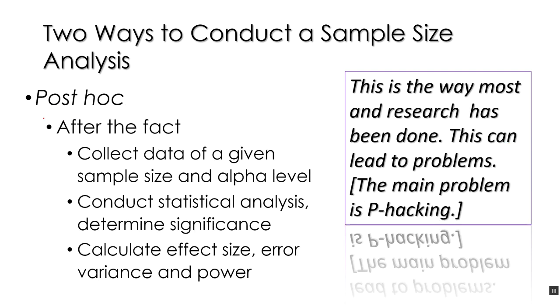The researcher should set these values of power and estimate error variance and estimate effect size beforehand, a priori, and then have a sample size which is an appropriate match to these values that they're interested in. And we'll be getting to why that's a problem in lecture section. And of course, the other method is post hoc, which means after the fact or after the experiment is done. You can in your experiment collect the data and you have a certain sample size, a certain alpha level, and then you'll just conduct a statistical analysis and determine significance there.